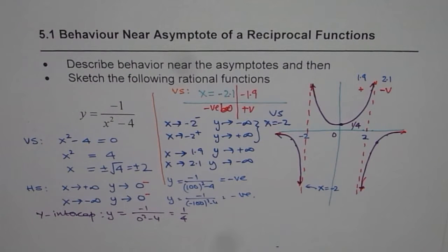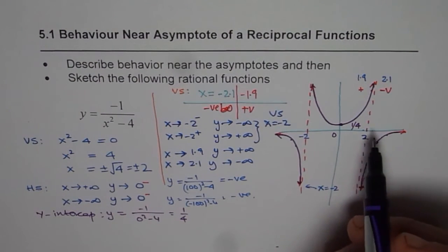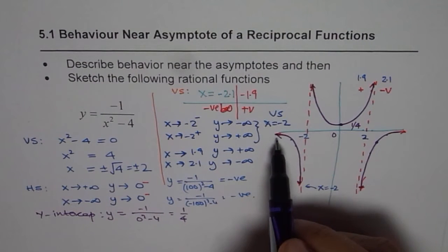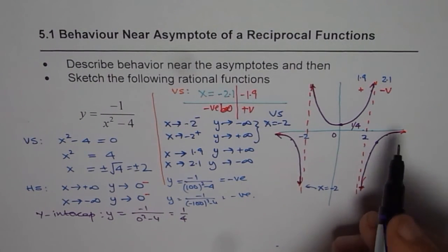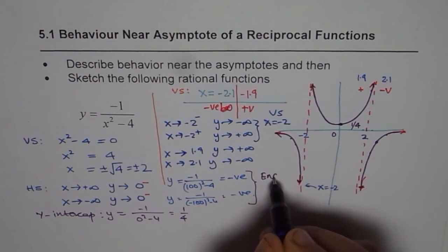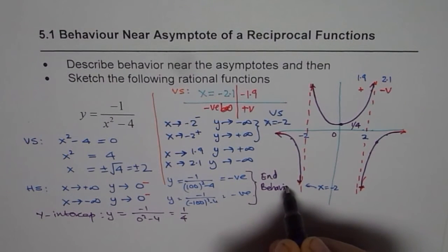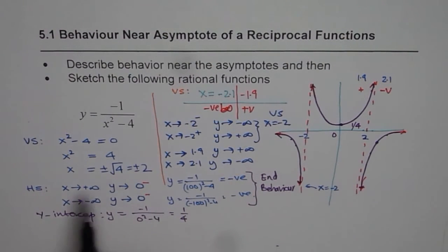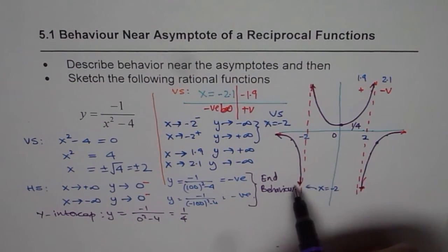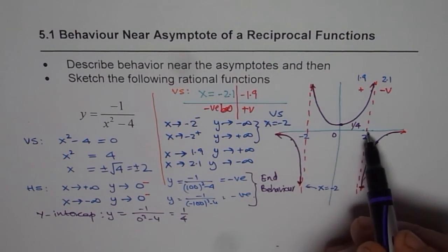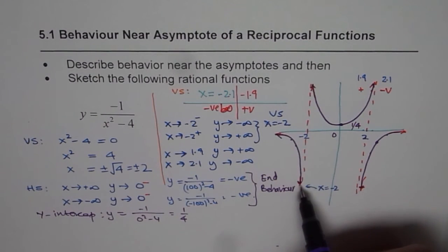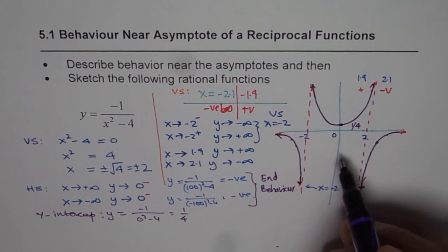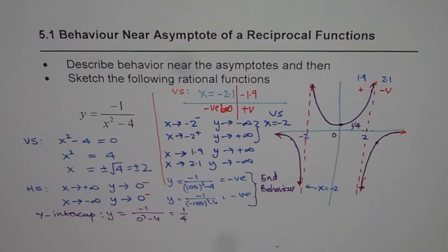I hope you understand and appreciate how to find the behavior of a function near its asymptotes. Behavior near horizontal asymptotes is the end behavior — checking when x approaches positive or negative infinity. Behavior near vertical asymptotes requires checking from both sides whether you are approaching positive or negative infinity. Once you know that, it is easy to accurately graph your function. Thank you and all the best.